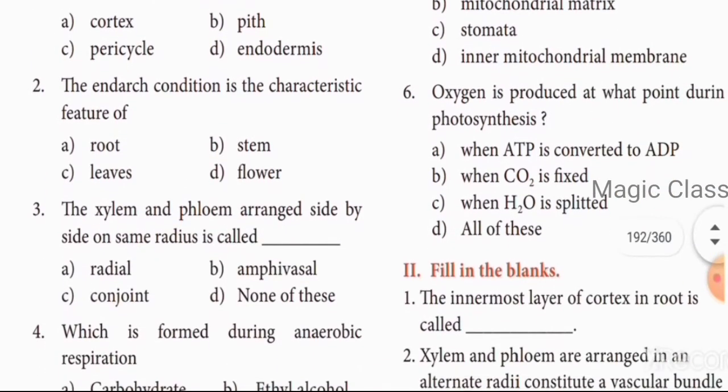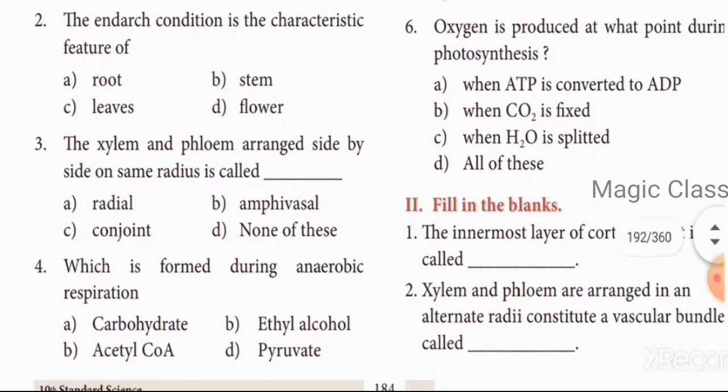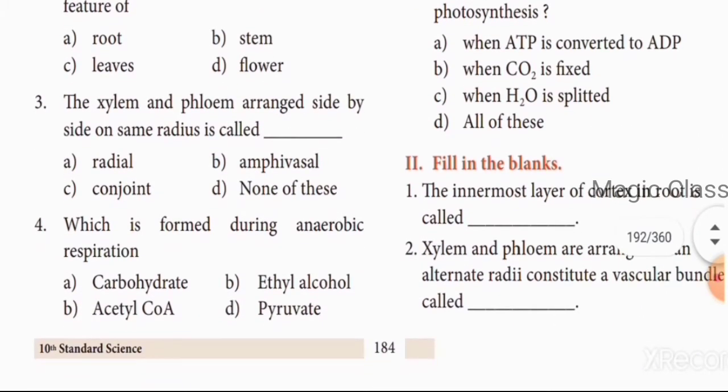Third question: xylem and phloem arranged side by side on the same radius — that is the conjoint condition. Fourth question: the product formed during anaerobic respiration, where oxygen is absent. Answer: Ethyl alcohol.